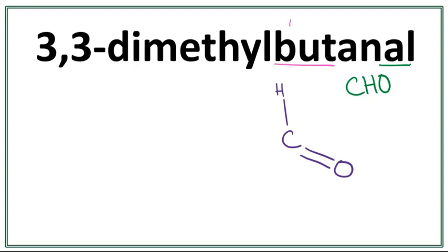The prefix 'but' means that there are four carbons in the longest carbon chain. A trick to draw this is that you always count till one less than the number of carbons you want to draw. So: 1, 2, 3.